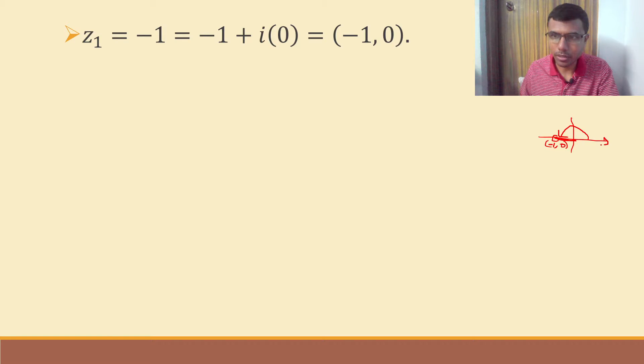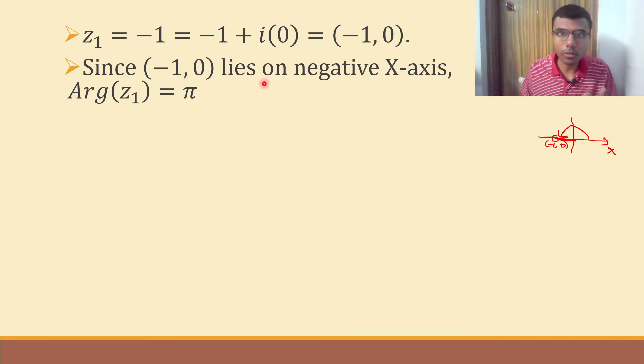This is my positive x-axis. So if you'll check this angle is 180 degrees. So basically that is pi. So that is what my argument is. Since minus 1 comma 0 lies on negative x-axis, argument of z1 is pi.